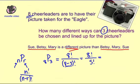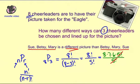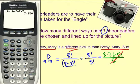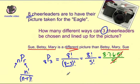Working with factorials, 8 factorial is 8 times 7 times 6 times — once I get to the 5, it goes 5, 4, 3, 2, 1. I'll stop and recognize that's 5 factorial, because there's a 5 factorial in the denominator. The 5 factorials in the top and bottom cancel, leaving us with just 8 times 7 times 6.